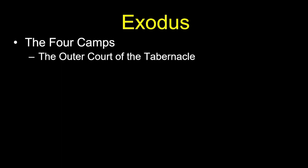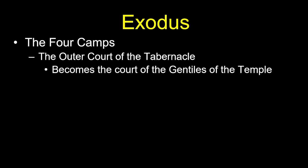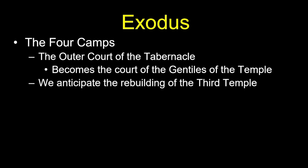The outer court, when the tabernacle is replaced by the permanent temple, becomes what is called the court of the Gentiles. The first temple refers to Solomon's temple; the second temple refers to Herod's temple, originally built by Nehemiah and then elaborately remodeled. This second temple is the one Jesus Christ presented himself in. A third temple is anticipated, and Ezekiel describes a fourth — the so-called millennial temple.